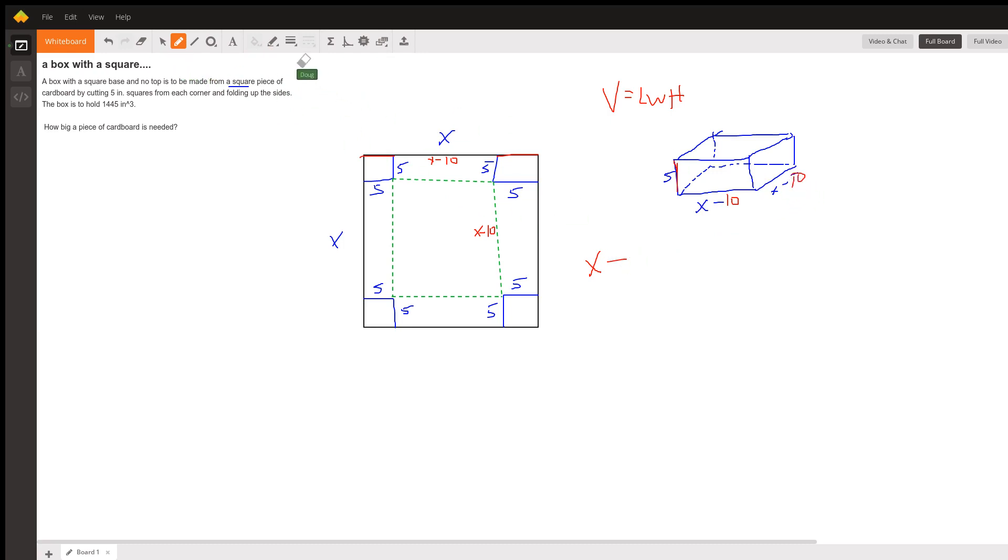So the sides of the box are X minus 10 times X minus 10 times the height, which is 5, and that should give us 1,445 inches cubed.